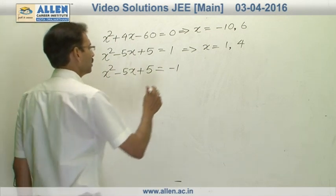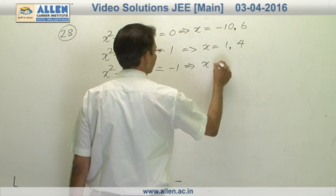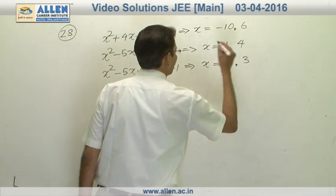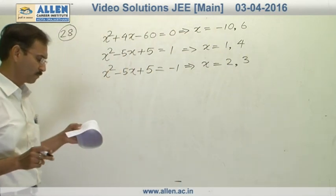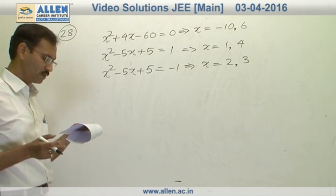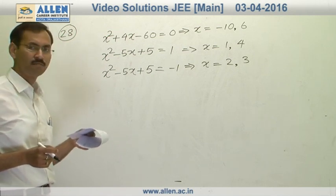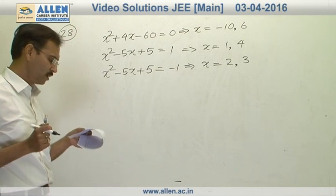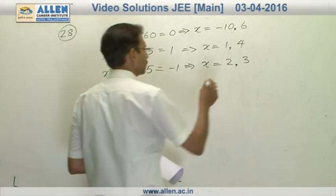In the case of minus 1, the x are 2 and 3. But when we substitute 3 in the equation, we can see base is minus 1, but the power is an odd number, negative odd integer. So it is not going to satisfy the equation.